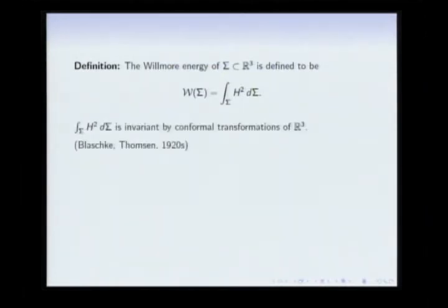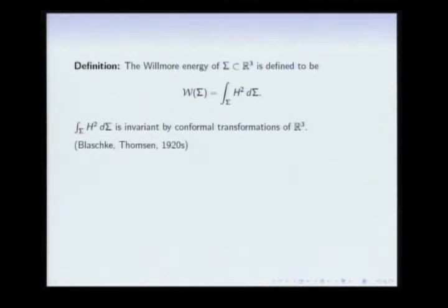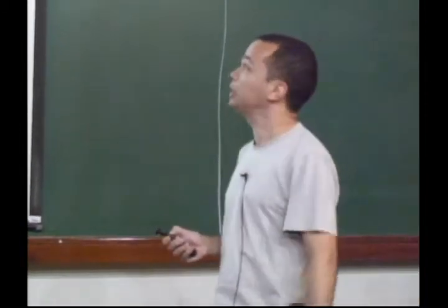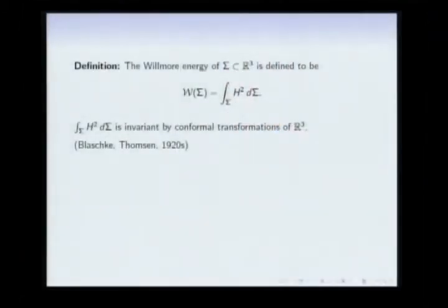This quantity is very special — it's the simplest energy of that type we can consider. It has the remarkable property of being invariant by the action of the conformal group of Euclidean 3-space. It's easy to check invariance under translations, rotations, and scalings, but it's also invariant by inversions. In reality it's invariant by the full action of the conformal group — a fact known in the 1920s to Blaschke and Thomson. So it's a very natural quantity in the setting of conformal geometry.